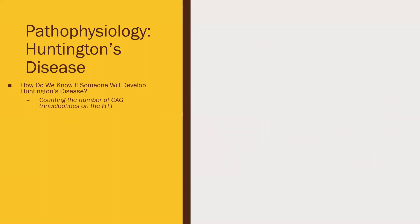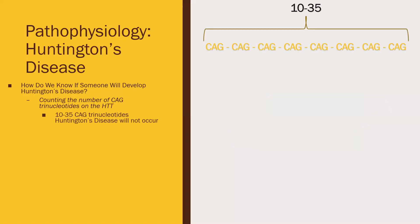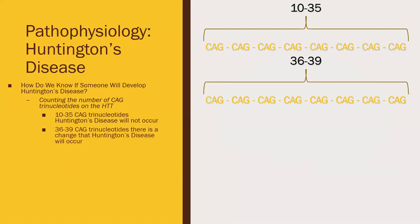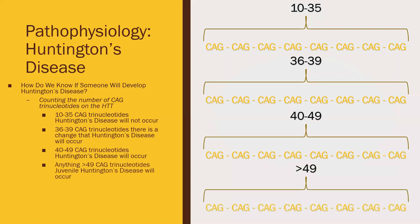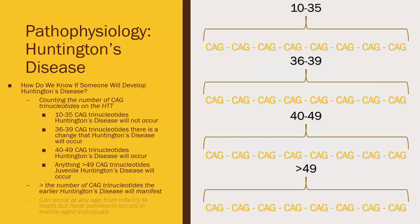We can determine if someone will develop HD by counting the number of CAG trinucleotides on the HTT gene. A range of 10 to 35 means HD will not occur; a range of 36 to 39 means HD has a chance to occur; a range of 40 to 49 means HD will occur; and anything above 49 means juvenile HD will occur. Generally, the larger the number of CAG trinucleotides, the earlier the onset of HD. The disease can occur at any age from infancy to death, but most commonly occurs in middle-aged individuals.